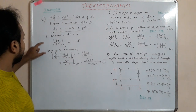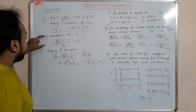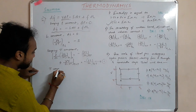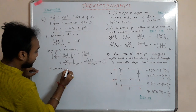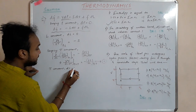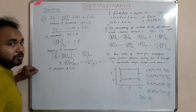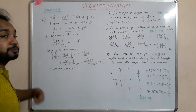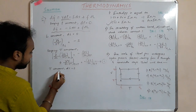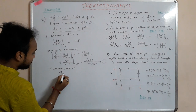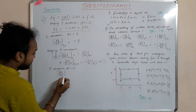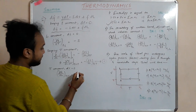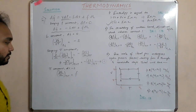Next, keeping T constant (dT = 0) and differentiating dG with respect to L gives F. So (∂G/∂L) at constant P, T = F.